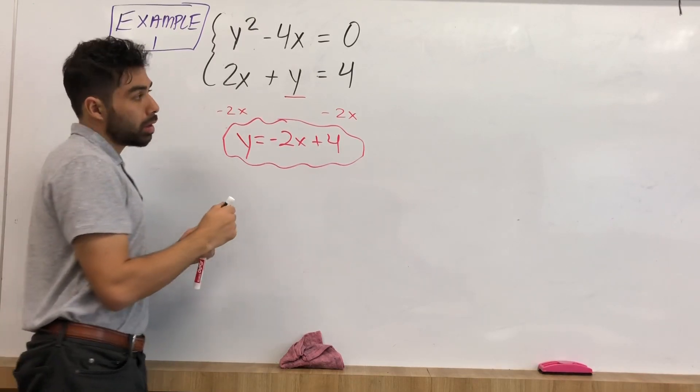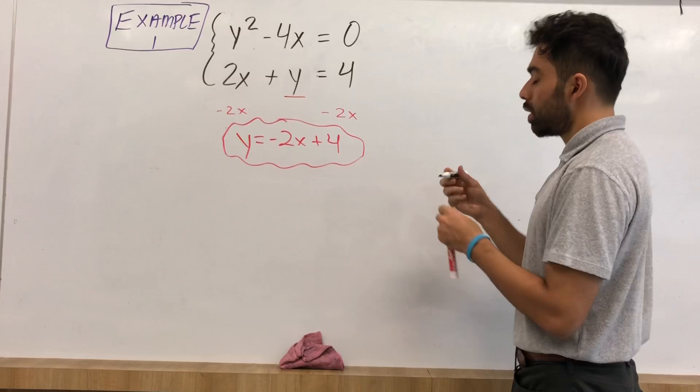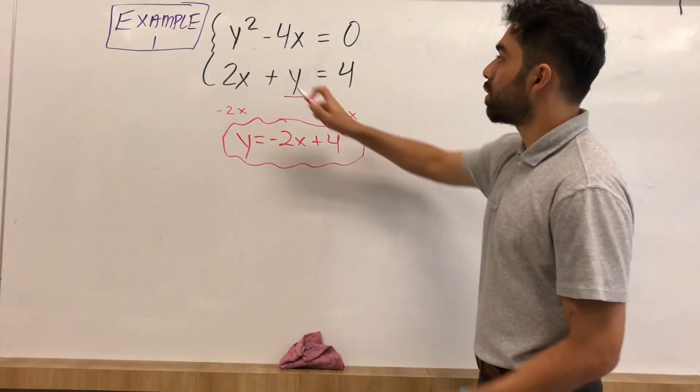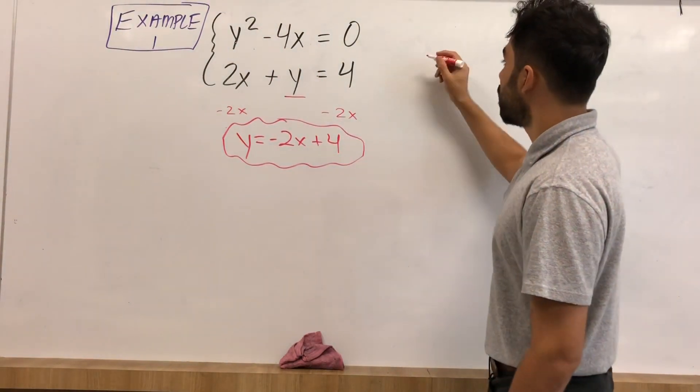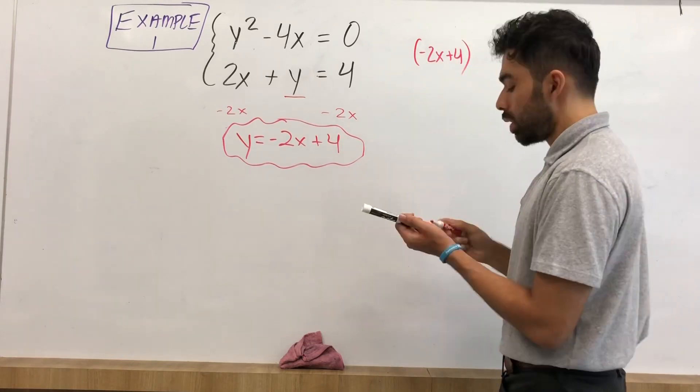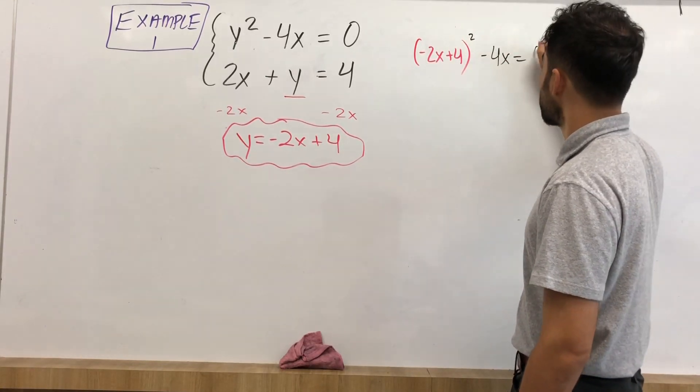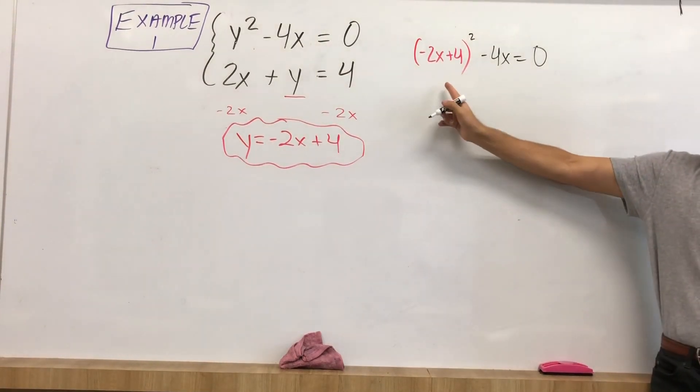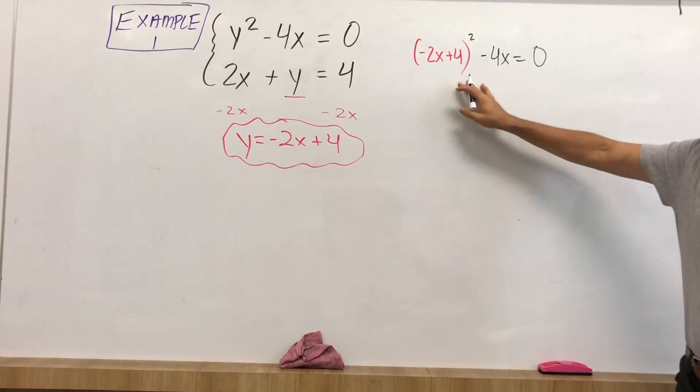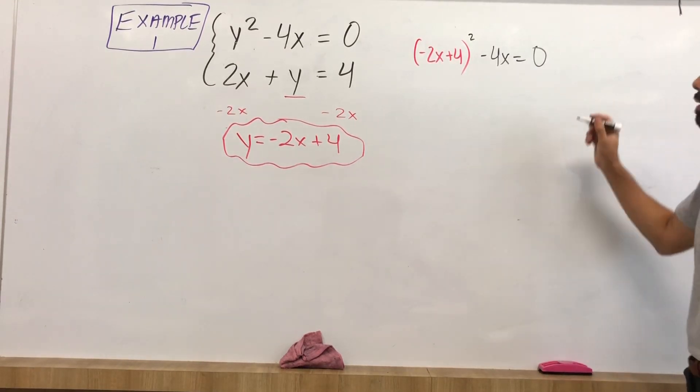Well, I can use this to my advantage by substituting it back in for my nonlinear equation. Let's go ahead and do that right now. So we have y squared minus 4x is equal to 0. I do know y is equivalent to negative 2x plus 4, so I'll substitute that for y. I do have to foil here. I'm hoping you guys remember. I'll do this real quick, just off to the side. That's FOIL, first, outside, inside, last.